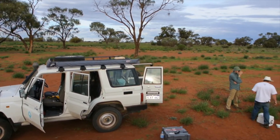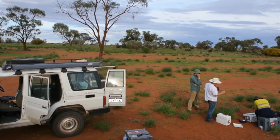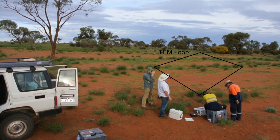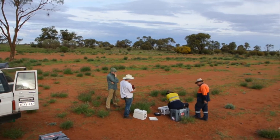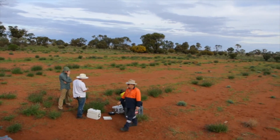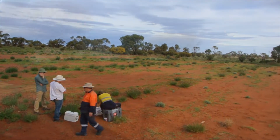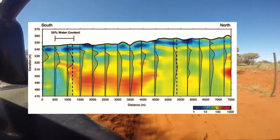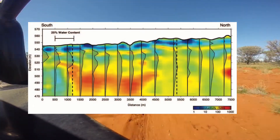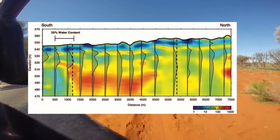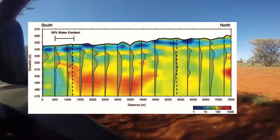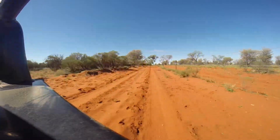We also use time domain electromagnetic measurements in part to retrieve a ground resistivity structure that can be used in the surface NMR inversion. Here's an example of the type of results we got from this study, with the grey curves indicating the NMR-derived water content, and areas that are high water content on top of the blue high-resistivity formation suggest good water quality.